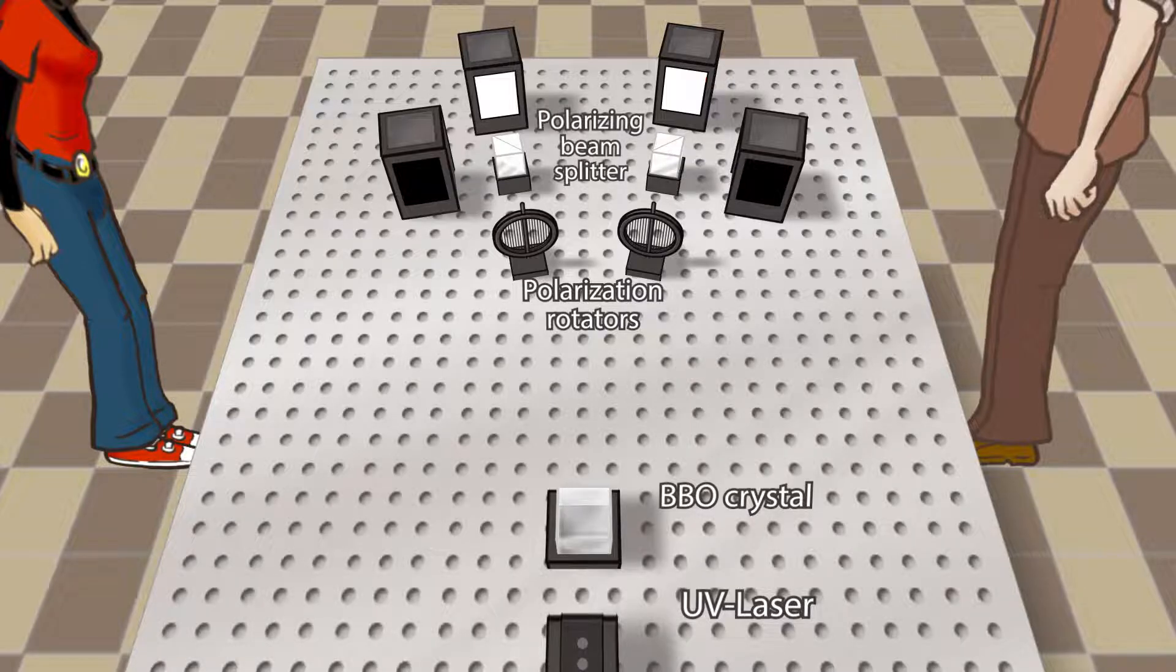BBO crystal. The crystal is optically birefringent. In this crystal, some of the incident ultraviolet photons create pairs of two photons, each having half energy and reverse polarization. That is, one horizontally polarized and one vertically.